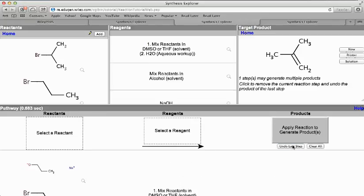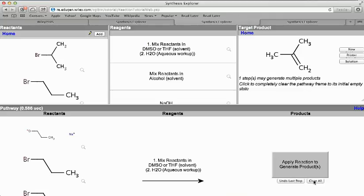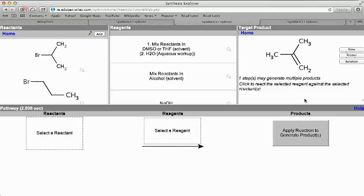You can always click the undo last step if you want to undo the last step or clear all if you just want to start from scratch. Now if you look at this product, you see how there's one, two, three, four carbons, three in a row, one coming off.